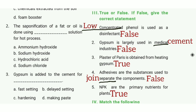Third one: Plaster of Paris is obtained by heating gypsum. The answer is true. Fourth one: Gypsum is the substance used to separate components. The answer is false. Fifth one: NPK are the primary nutrients for plants. The answer is true.